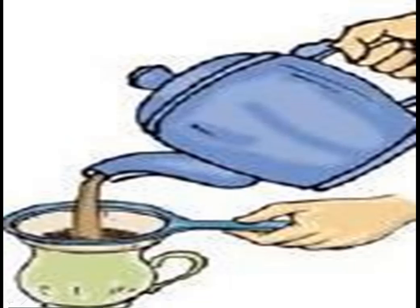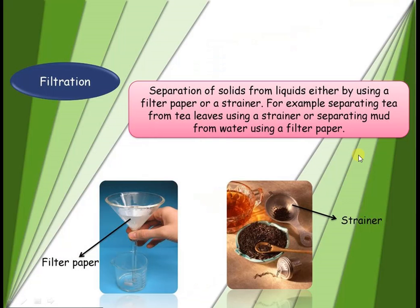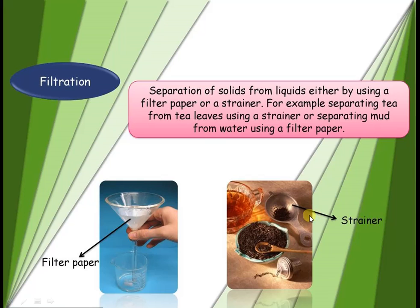How will you separate the tea leaves from tea? Tea leaves are separated from tea using a strainer. Have you seen a strainer in your kitchen? Tea leaves are insoluble substances as compared to the milk, water and sugar. So, separation of solids from liquids is done either by using a filter paper or a strainer — for example, separating tea from tea leaves using a strainer.